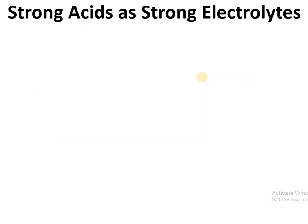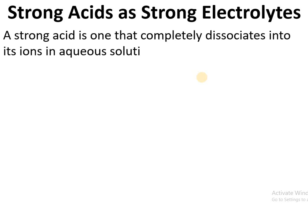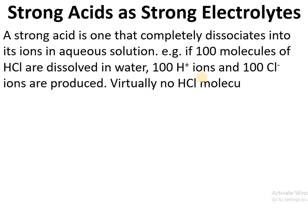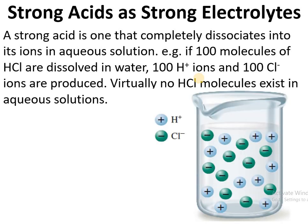Strong acids as strong electrolytes: a strong acid is one that completely dissociates into its ions in aqueous solution. For example, if 100 molecules of HCl are dissolved in water, 100 H⁺ ions and 100 Cl⁻ ions are produced, and virtually no HCl molecules exist in the aqueous solution. In the image, we can see that only H⁺ and Cl⁻ ions exist and no HCl molecules remain in solution form. Hence, strong acids behave as strong electrolytes.